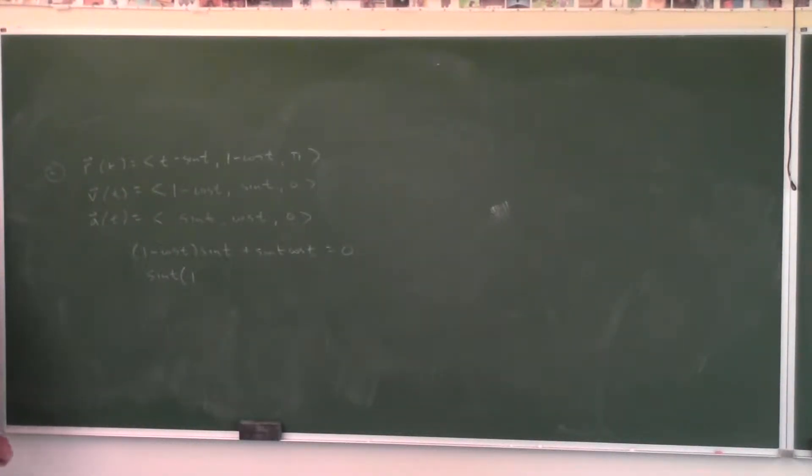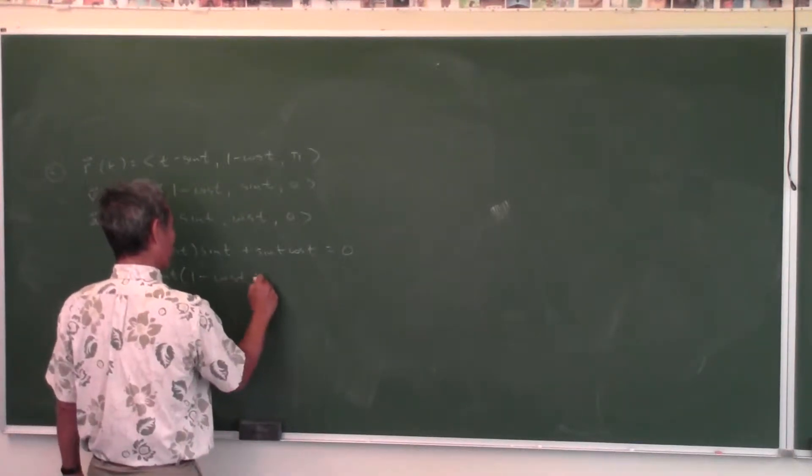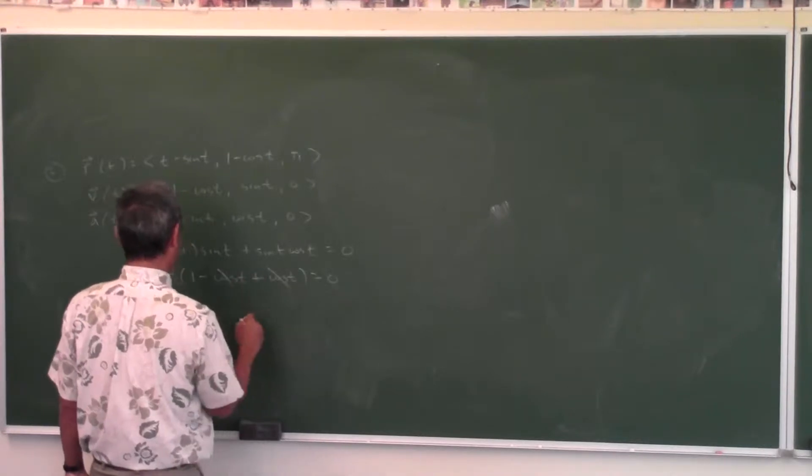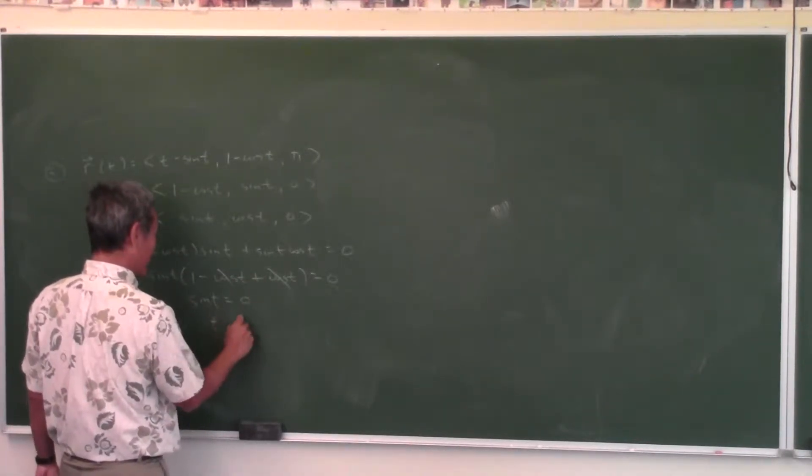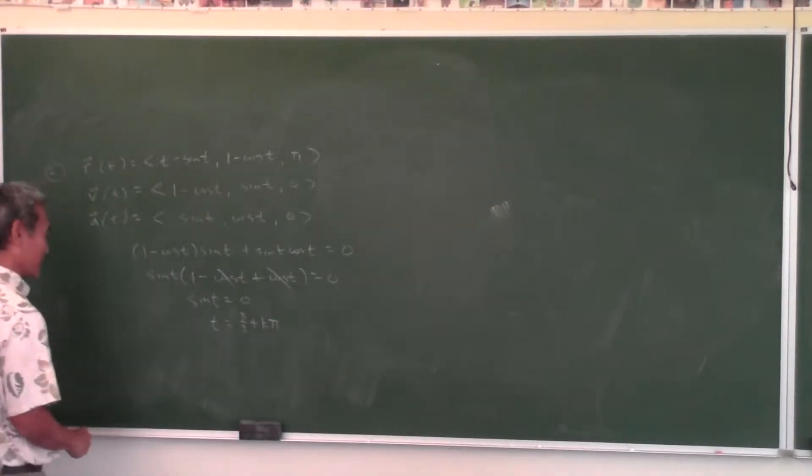So we solve this equation, we factor out a sine t, and you get one minus cosine t plus cosine t. The cosines cancel out, we get one, so we just have sine t equals zero. When t is equal to pi over two plus k pi, correct? Where k is an integer.